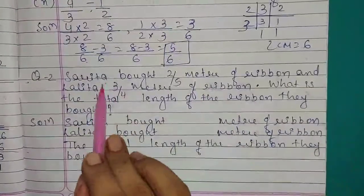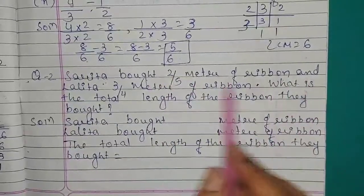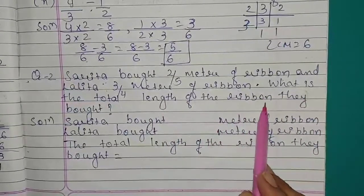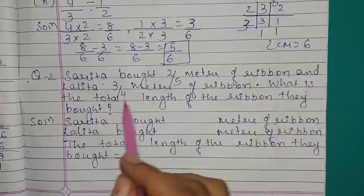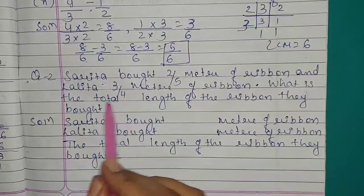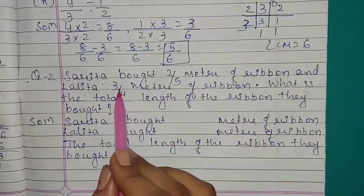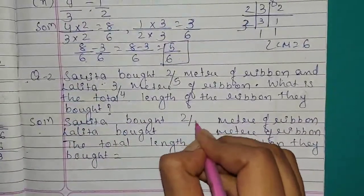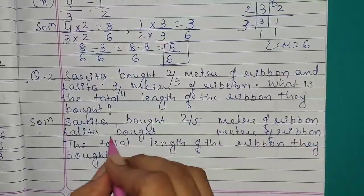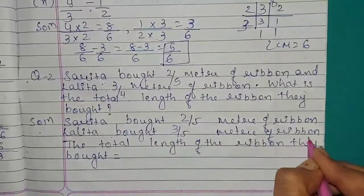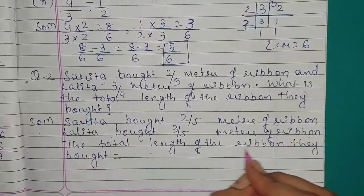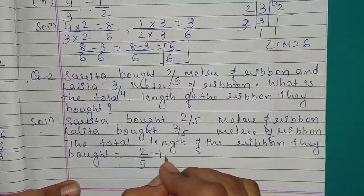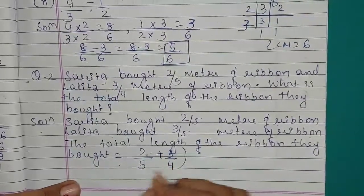Question number 2: Sarita bought 2 upon 5 meter of ribbon and Lalita bought 3 upon 4 meter of ribbon. What is the total length of the ribbon they bought? We will do addition of these fractions: total length equals 2 upon 5 plus 3 upon 4 meter.